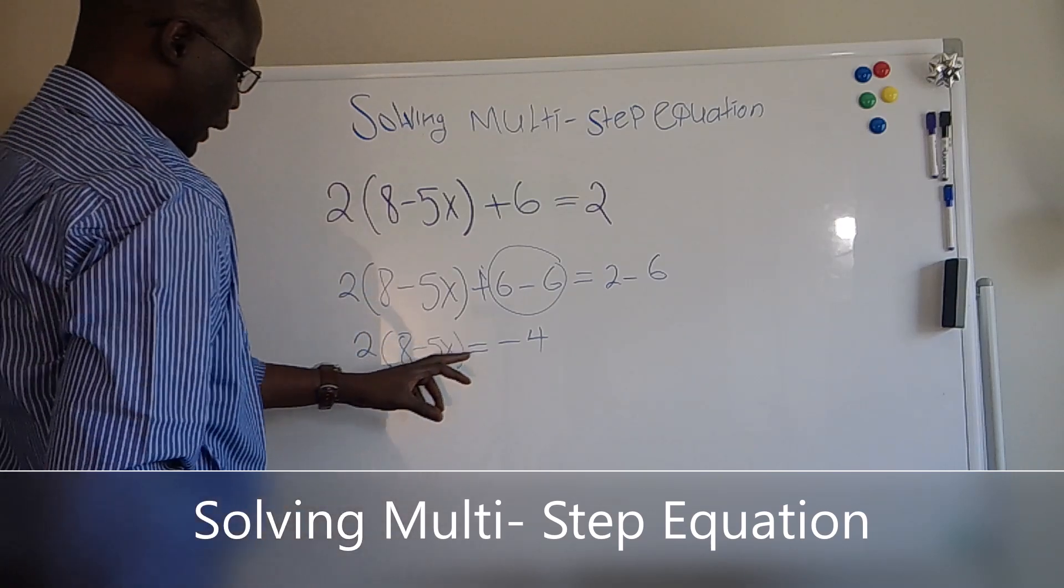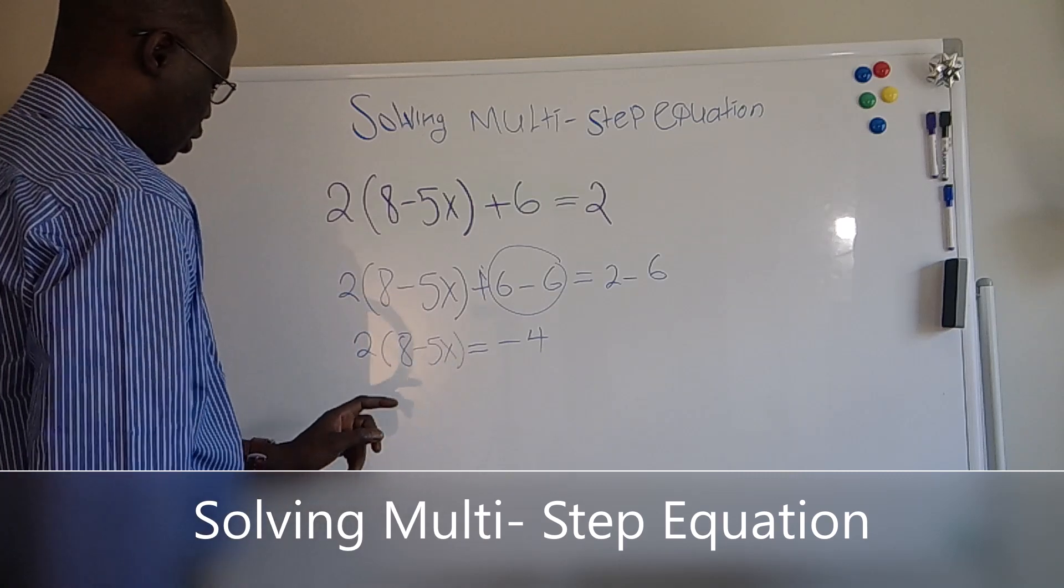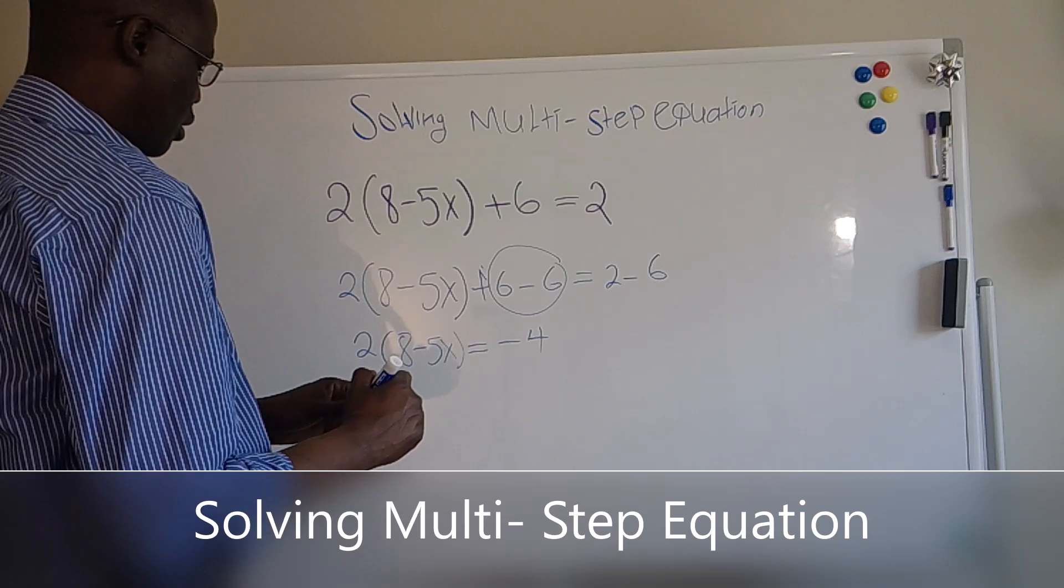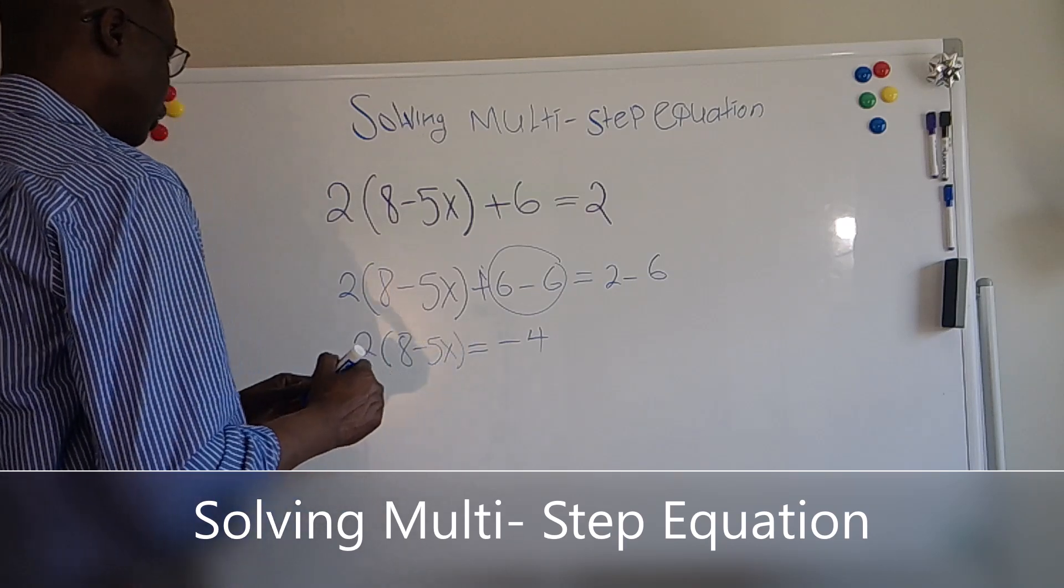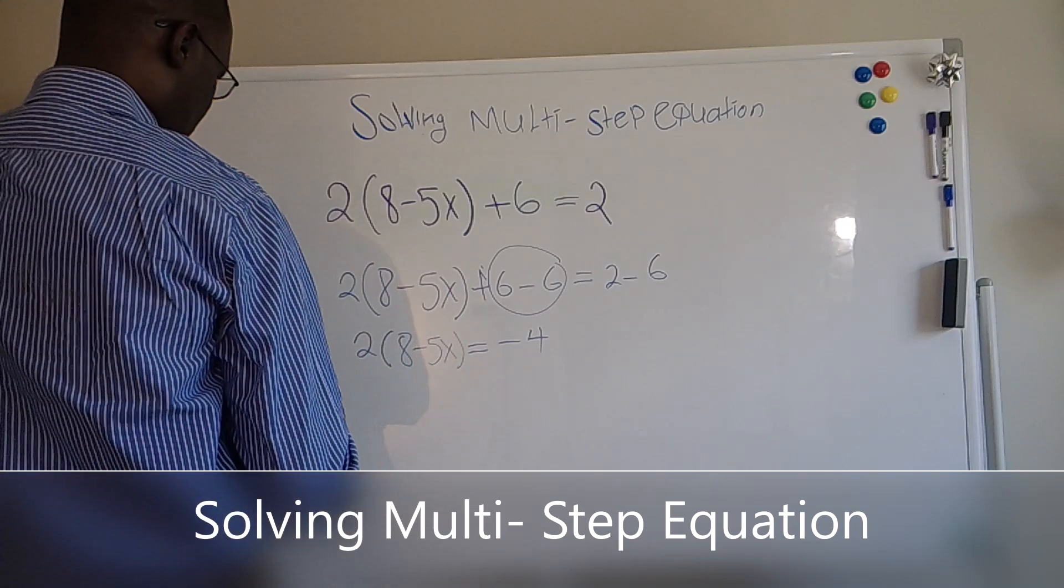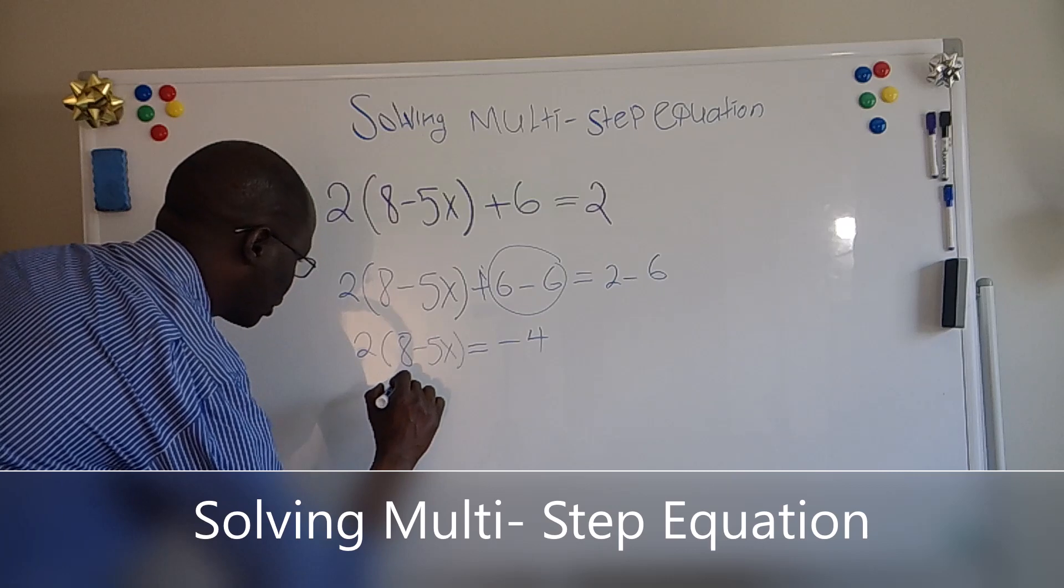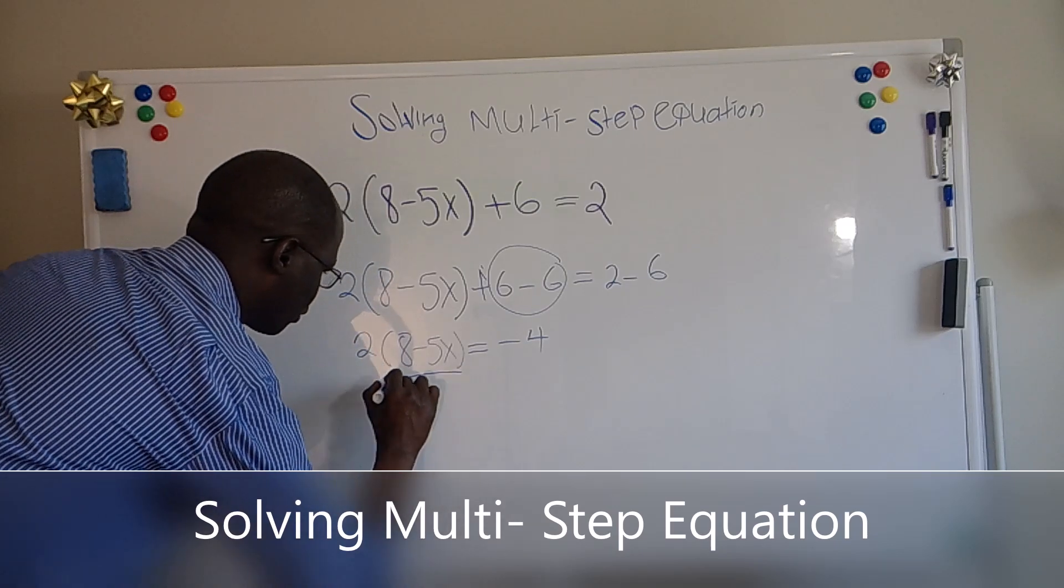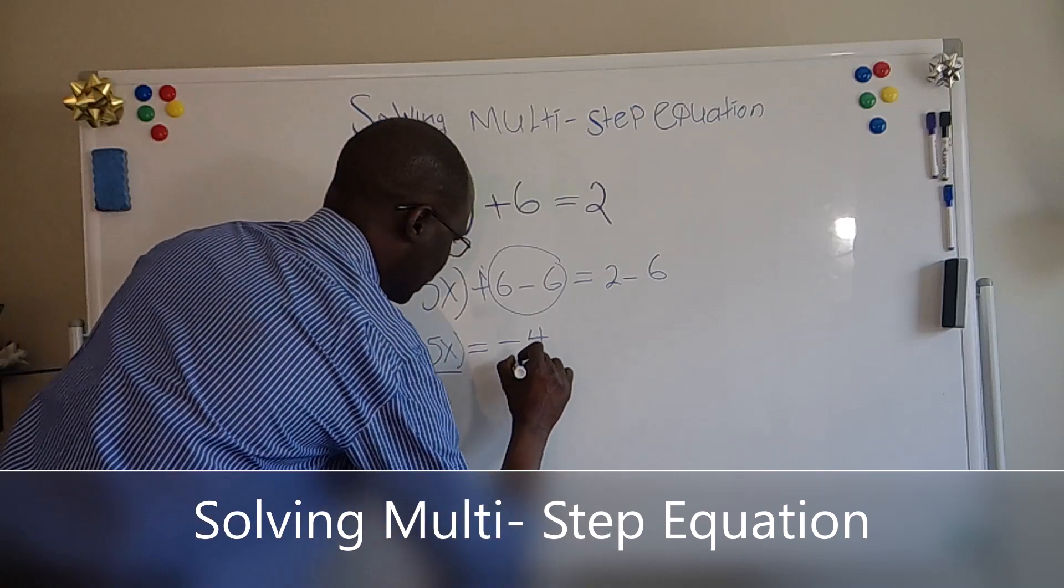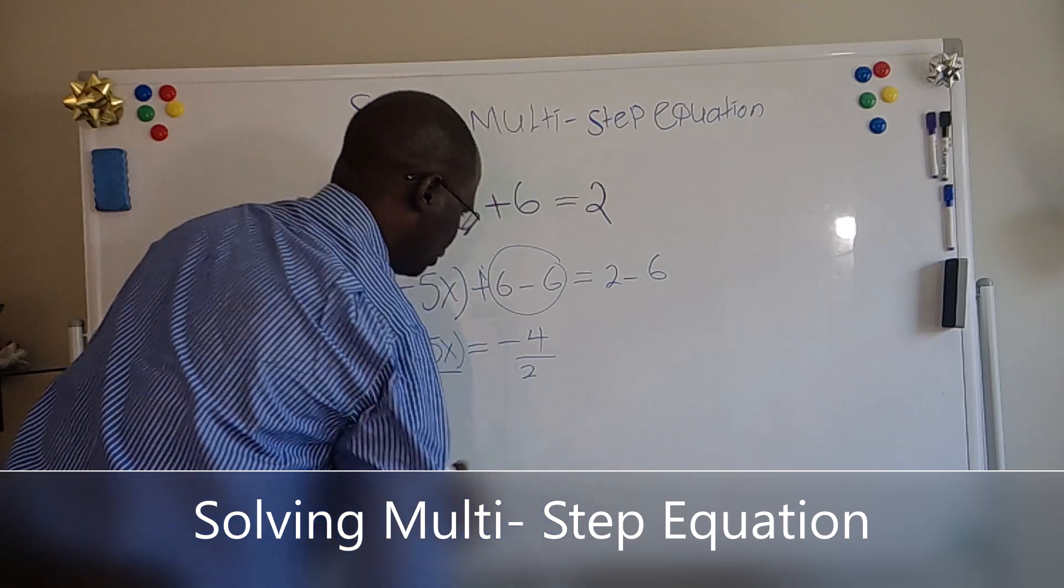Take a look again and see what we can get rid of here. It's 2. So what we're going to do here, we're going to divide by 2 both sides of the equation. So 2 divided, because we're taking this 2, and minus 4 divided by 2.